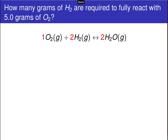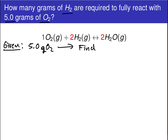In this problem, we are asked to determine how many grams of H2 are required to fully react with five grams of O2. There are going to be multiple steps here, so let's break this down and identify what we're given: five grams of O2. Our goal is to find the number of grams of H2 required to fully react with this five grams of O2.